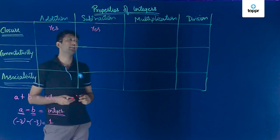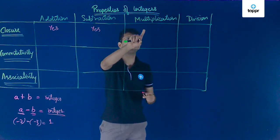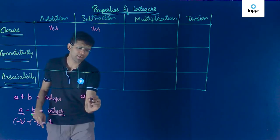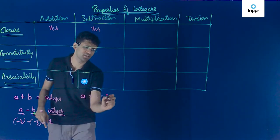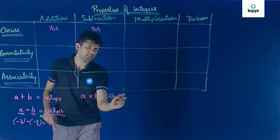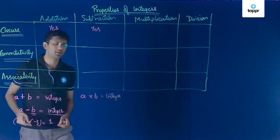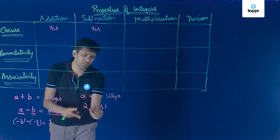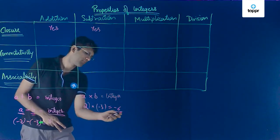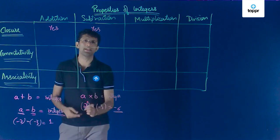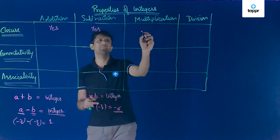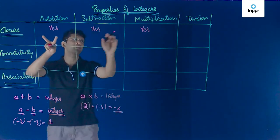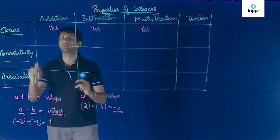Now let us come to multiplication of integers. If you take two integers a and b and multiply them, the result will again be an integer. For instance, if a = 2 and b = −3, then multiplying gives −6, which is also an integer. Because of this we can say that multiplication also follows the closure property.